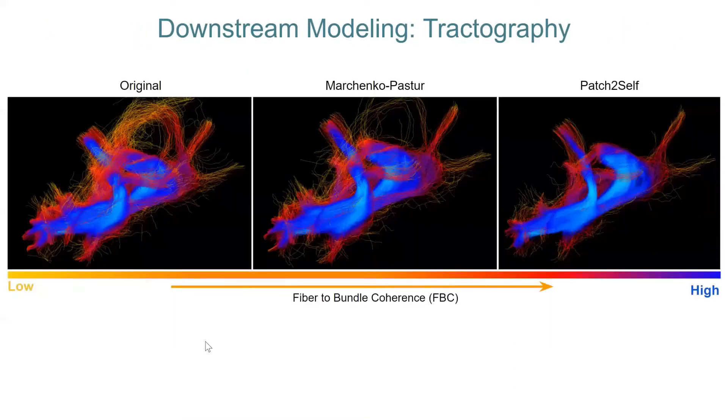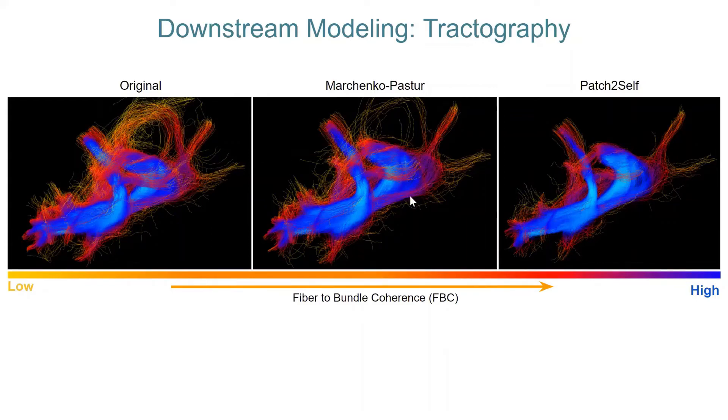Then when we look at tractography, you see that the original data, which had a lot of false positives, like the yellowish red lines that you see in the optic radiation bundle, they reduce as the denoising result improves. There are some that are there due to Marchenko-Pastur PCA, but Patch2Self, they go away a little more.